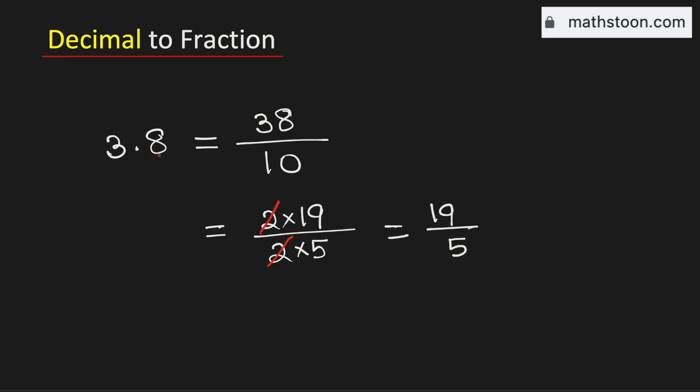Therefore 3.8 as a fraction is equal to 19 over 5, and this is our final answer. Now look that this is an improper fraction because 19 is greater than 5.